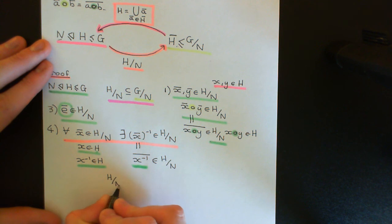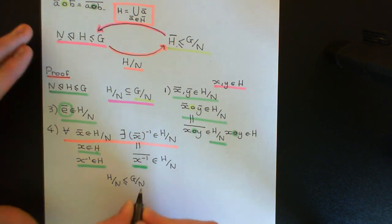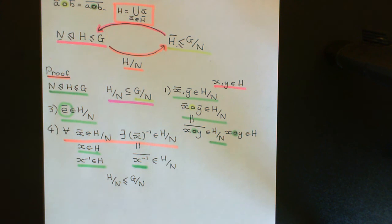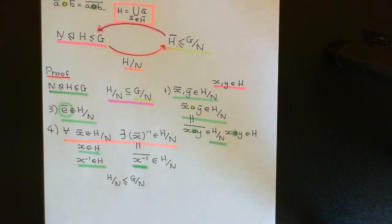So H/N is indeed a subgroup of G/N. You can truly find a very natural way of taking any subgroup of G that contains the normal subgroup N and taking it to a corresponding subgroup of the quotient group. We'll have a break here, and in the next video we'll prove the other direction: that a subgroup of the quotient group naturally gives a subgroup of the initial group that completely contains the normal subgroup.